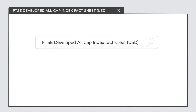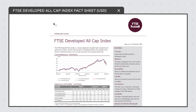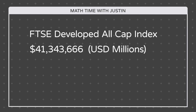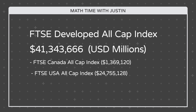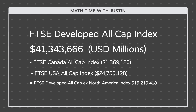We can do the same thing for Vanguard ETFs, although it has a few more steps. We'll start by searching for the FTSE Developed All-Cap Index fact sheet in US dollars. Although we are really looking for the FTSE Developed All-Cap ex-North America Index fact sheet, it's not readily available — but we can adapt this fact sheet for our purposes. We're looking for the country breakdown on page 2. As of December 31st, 2018, the index market cap was $41,343,666 in USD millions. However, this figure includes North American companies, so we need to deduct the Canada and US market caps from the total. Canada and the US have a market cap of $1,369,120 and $24,755,128 in USD millions respectively. Therefore, the market cap of the FTSE Developed All-Cap ex-North America Index is $15,219,418 in USD millions.